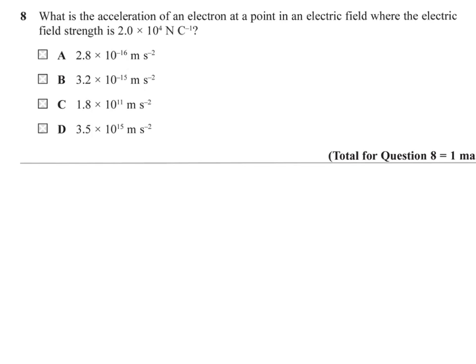Question 8. What is the acceleration of electron at a point in an electric field where the electric field strength is 2 times 10 to the 4 newtons per coulomb? So, the acceleration of anything is going to be F over M from Newton's second law. And we also need to know the force on an electron. In this situation, the force of an electron is going to be the electric field times the charge of an electron. So, A is going to be the electric field times little e over the mass of an electron.